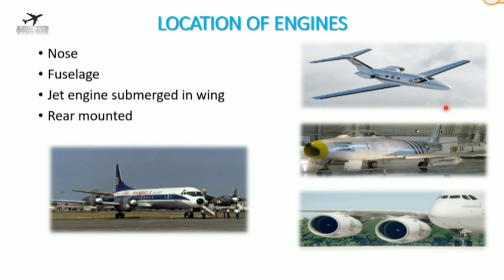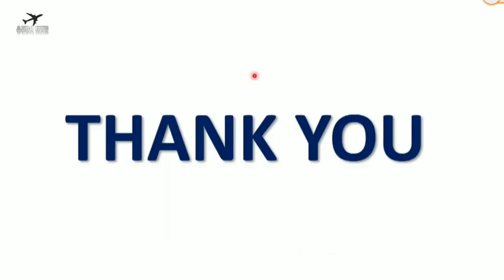Regarding engine location, engines are usually placed at the nose or frontal area, in the fuselage, submerged in the wing, or rear-mounted. Based on the number of engines, an aircraft can have a single engine, double engine, or multiple engines. This concludes today's session on aircraft propulsion. Thank you so much.